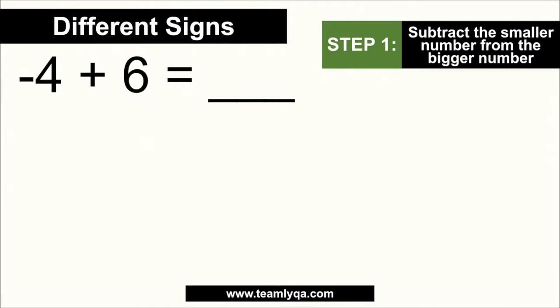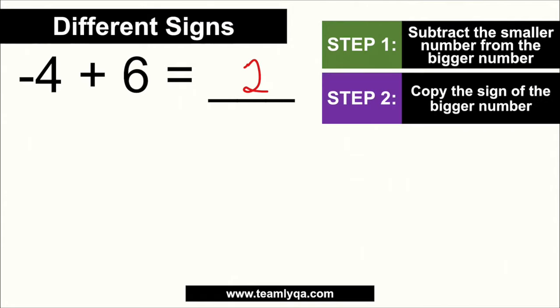It gets a little more complicated kapag different yung signs. Kapag different yung signs, for example, negative 4 plus 6 is equal to what? Ang step 1 natin is different. You're going to first subtract the smaller number from the bigger number. Again, ignoring the signs. Ibig sabihin mo na isipin yung sign. Ano ba yung mas malaki? 4 o 6? Mas malaki yung 6. So ang gagawin mo, babawas mo yung 4 sa 6. So mangyayari is 6 minus 4. So 6 minus 4 is 2. And then step 2 is you copy the sign of the bigger number. So ano ba yung mas malaki? 4 o 6? Ang mas malaki ay 6 at siya ay positive. So kung positive 6 ang mas malaki, the answer is positive 2 or 2.